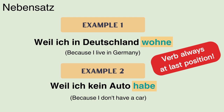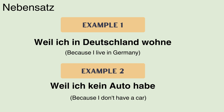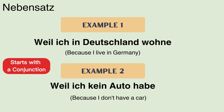Another important characteristic of a Nebensatz is that the verb goes to the end, or last position — this can be seen in both examples. Another important thing to remember is that a Nebensatz usually starts with a conjunction; in this case the conjunction is 'Weil.' A conjunction is a word which connects two sentences.